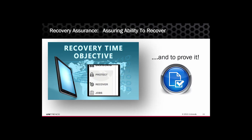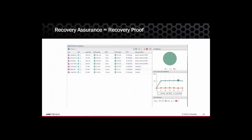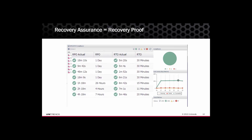Unitrends provides Recovery Assurance technology via our Reliable DR solution to solve this problem by automating DR testing and failover. With Recovery Assurance, IT can know with 100% confidence that backup and DR environments are going to work, because Reliable DR validates recoverability on a regular basis at the application level. IT can now know that recovery time objectives and recovery point objectives are being met in actuality. You get recovery proof in the form of RPO and RTO actual compliance reports, delivered automatically to IT as often as necessary.